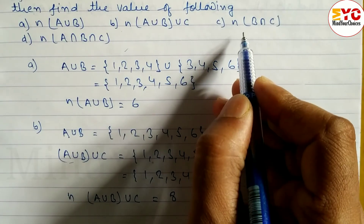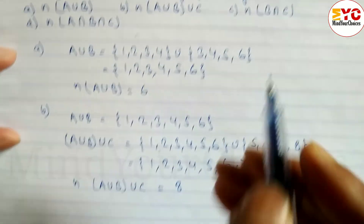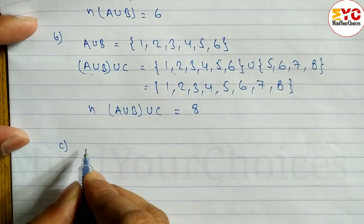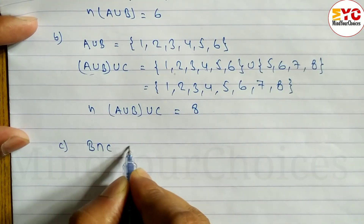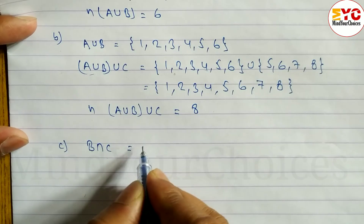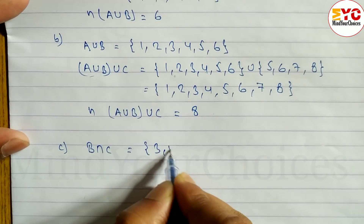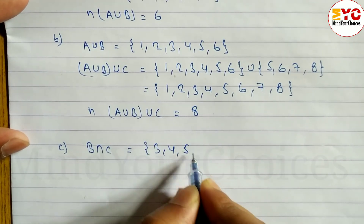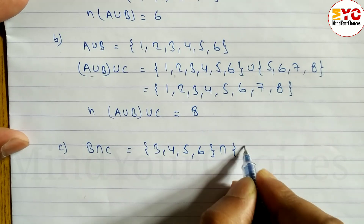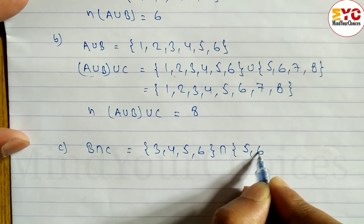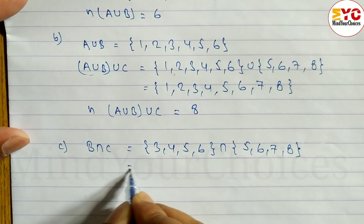Next, we have to find A intersection B. First, we will find B intersection C. Set B is {3, 4, 5, 6}, intersection C. C is equal to {5, 6, 7, 8}. Intersection C.